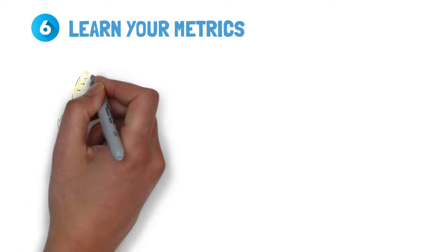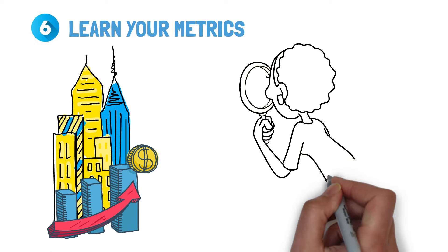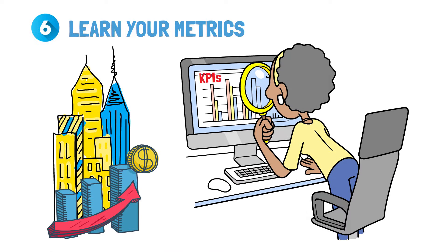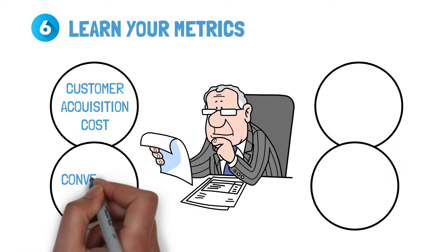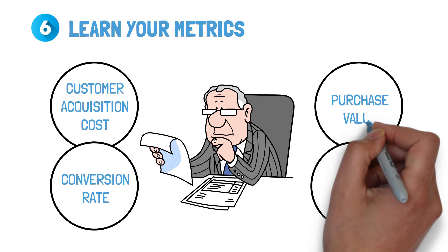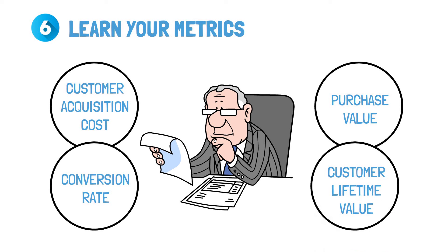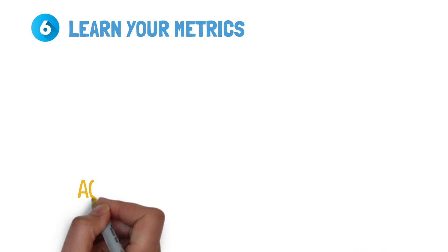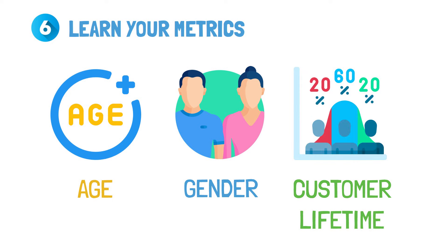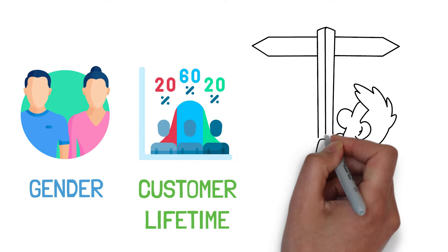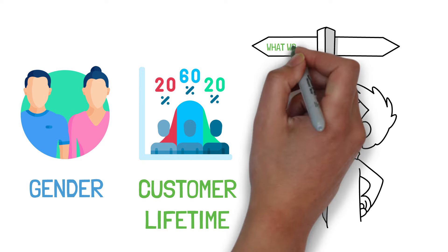Lesson six: learn your metrics. As your company grows, it is critical to monitor and analyze all of your key metrics. You must understand your customer acquisition cost, conversion rate, purchase value, customer lifetime value, as well as user behavior based on age, gender, and customer lifetime. This can provide you with valuable information to help you make informed decisions and have a better grasp of what works and what does not.